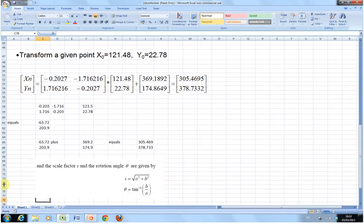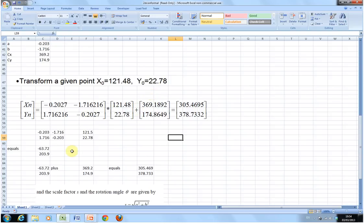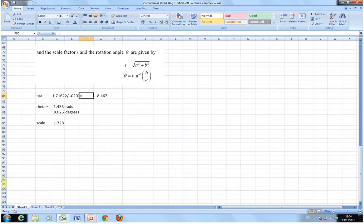And then I want to work out what the actual scale and what the rotation is. So, the scale is the square root of A squared plus B squared, and theta is tan inverse of B over A. So, B over A is minus 1.716 divided by minus 0.20, which is 8.467. How do I get tan inverse? Equal A-tan. So, it's 1.453 rads. I converted that to decimal degrees by using the Excel function equal degrees, and then I got the scale, which is the square root of D58 squared and C58 squared, and I got 1.728.